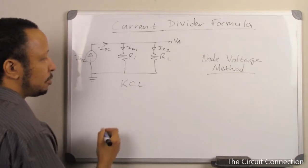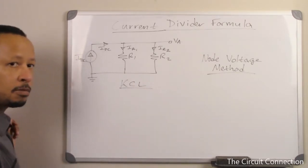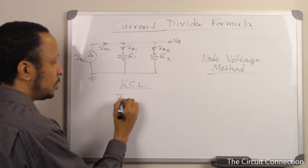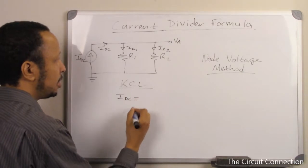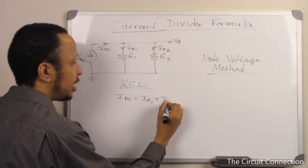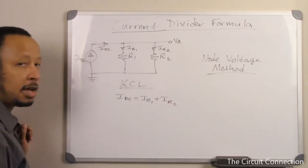For starters, we have a situation where I'll be using KCL, Kirchhoff's current law, which is a current law that tells you IDC equals IR1 plus IR2. It's a conservation law.